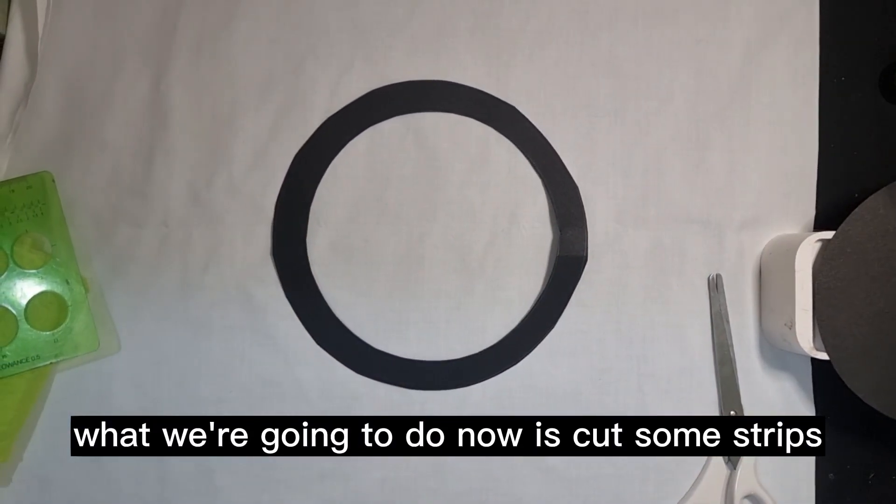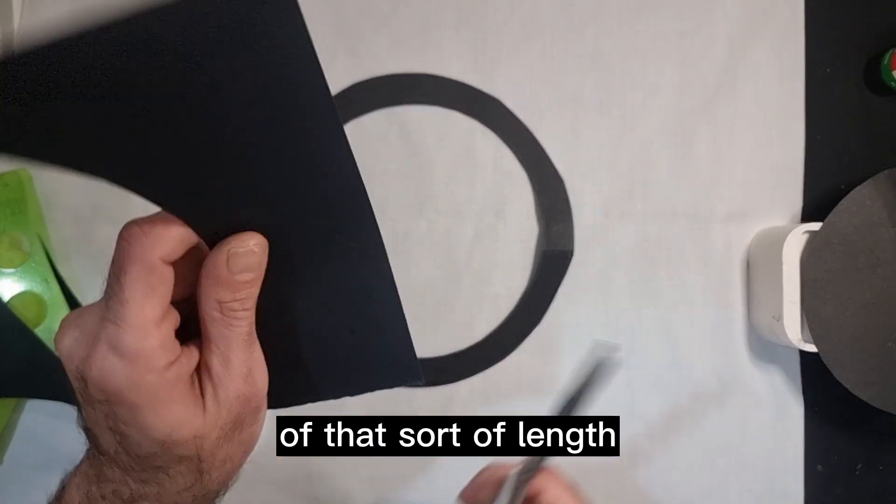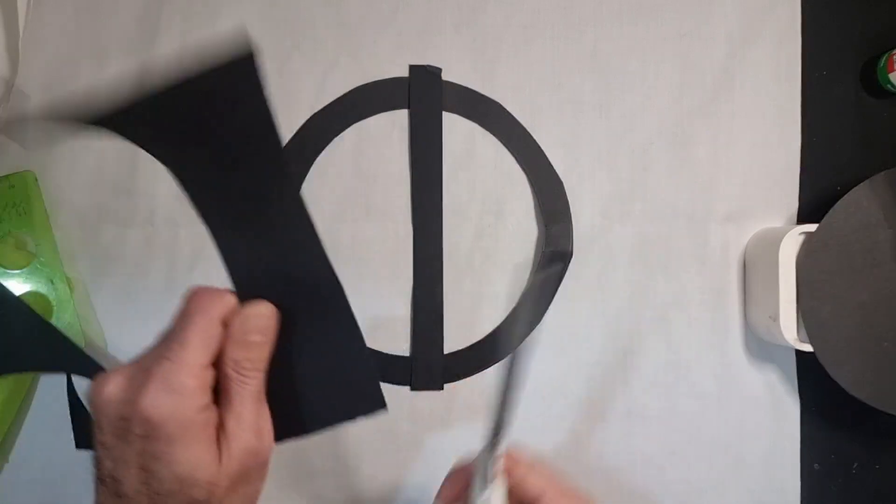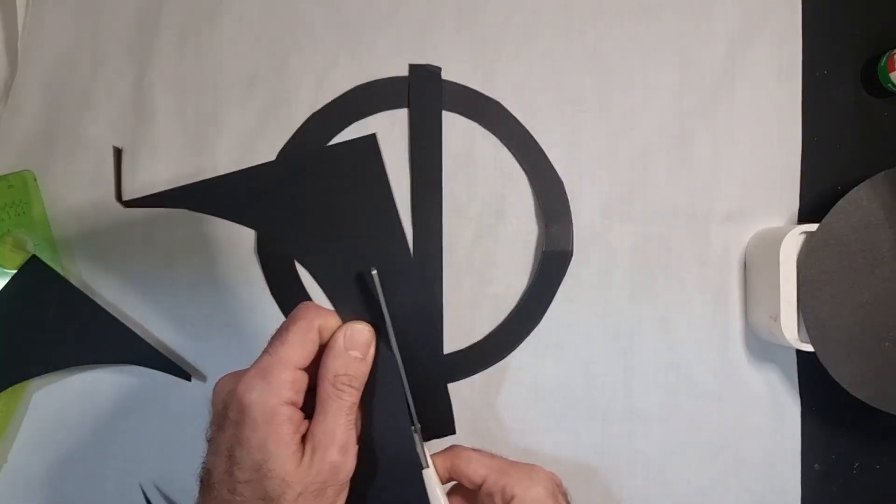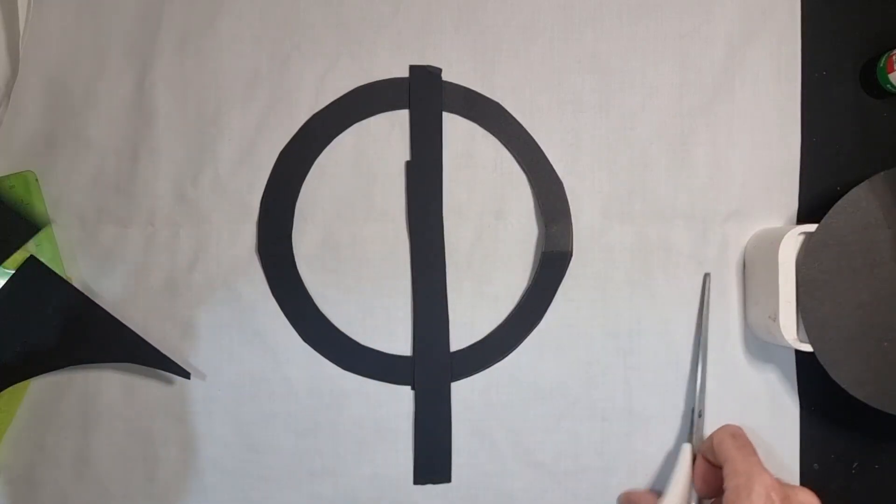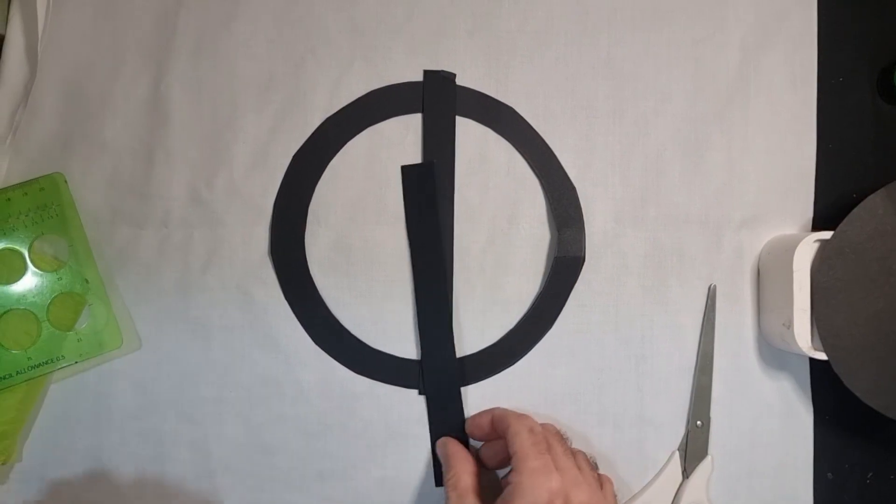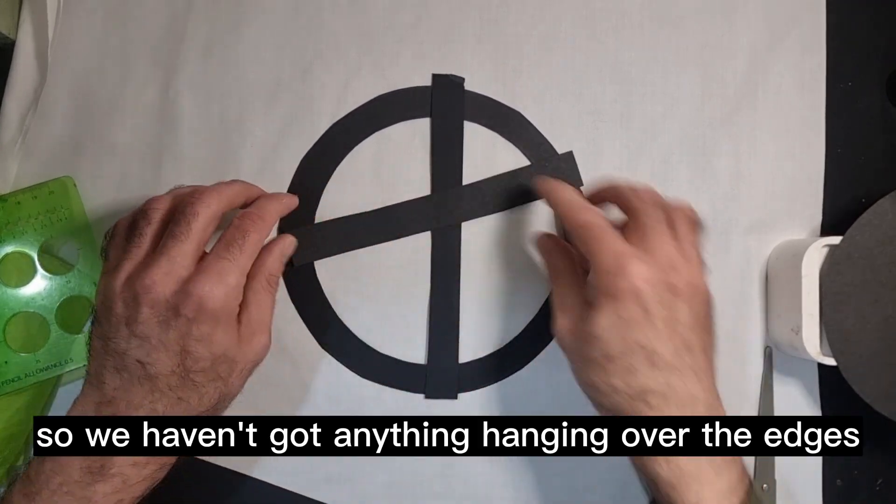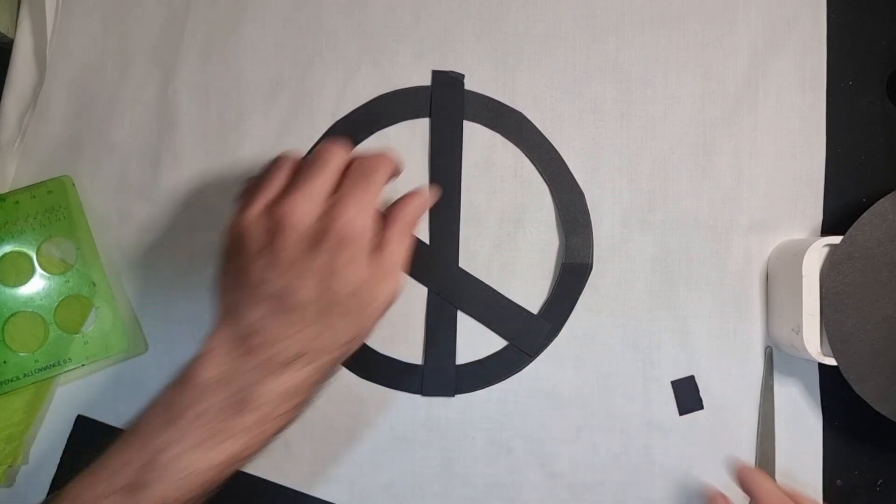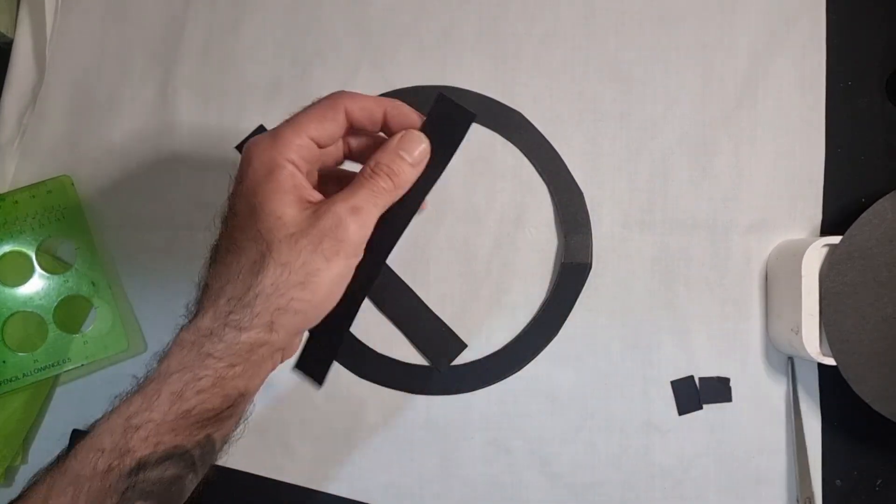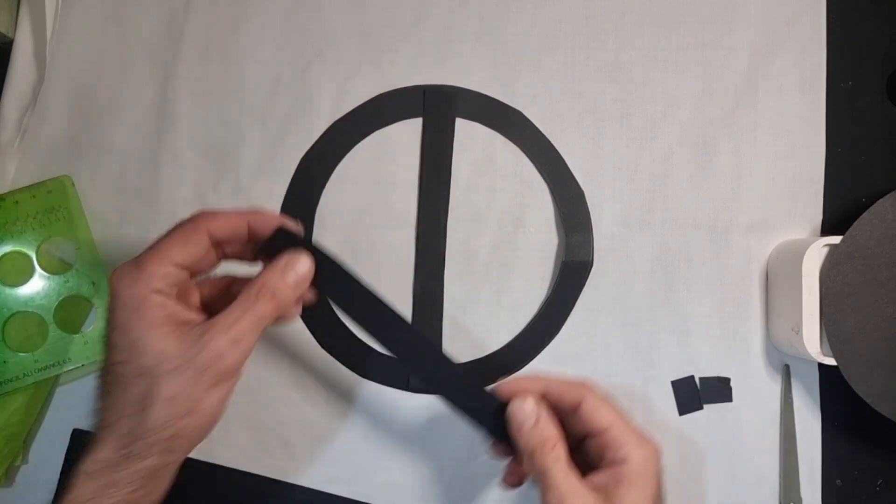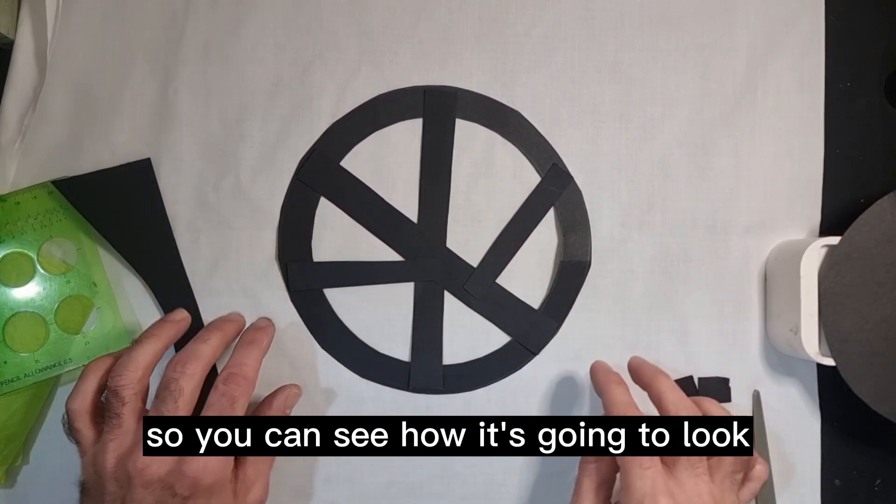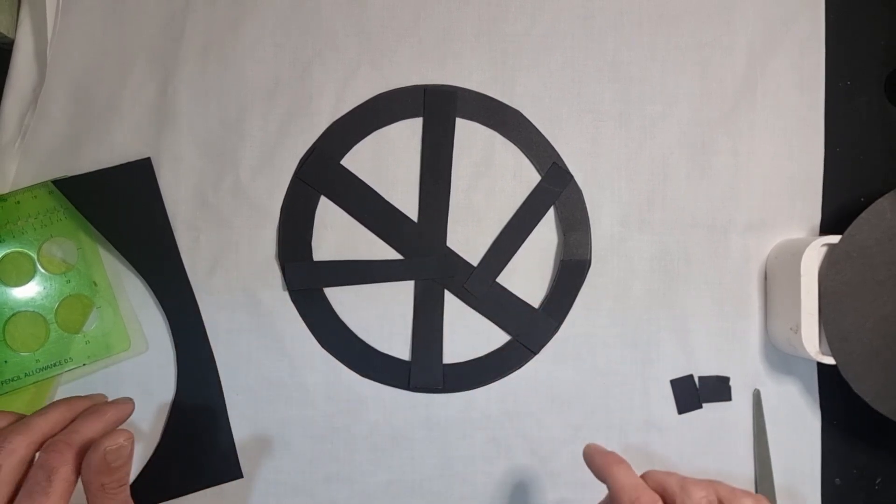What we're going to do now is cut some strips of that sort of length. Very random strips we're going to cut, a little bit more off of that so that we haven't got anything hanging over the edges. Before you glue it down, just adjust it around so you can see how it's going to look. That looks pretty cool like that.